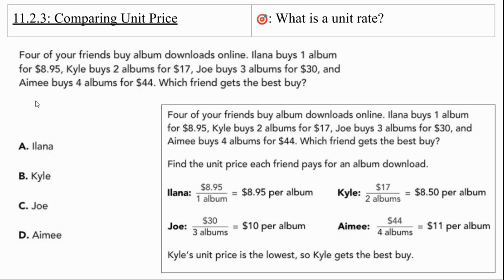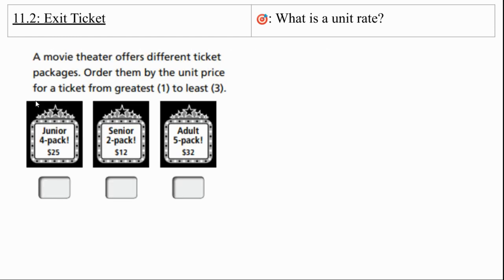So for Lana, it's $8.95 per album. Joe, it's going to be $10 per album. Kyle is $8.50 per album. And Amy is $11 per album. Make sure you've circled the correct answer in your notes. That's going to be Kyle. He's going to get the best deal. But Lana is not going to be too far behind him.